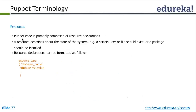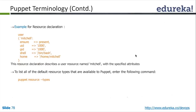Puppet code is primarily composed of resource declarations. A resource describes the desired state of the system — for example, a certain user or file should exist, or a package should be installed. A resource could be a configuration file or a package that needs to exist on a particular node. You need to declare this on the server side before it can be applied to the client side.